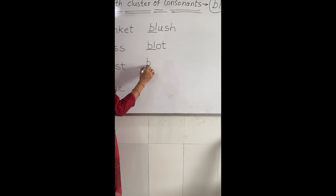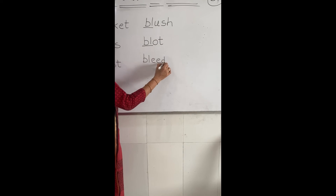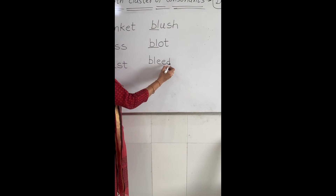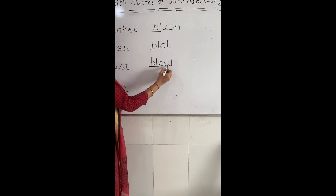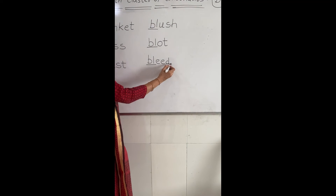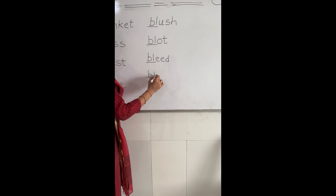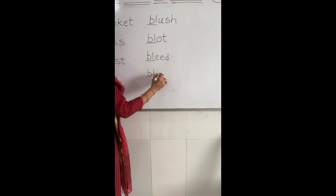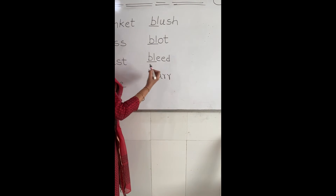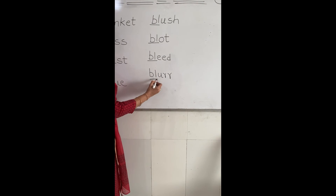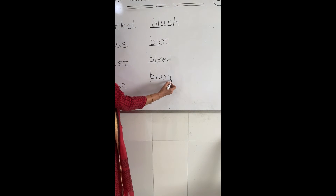The next word is 'blur'. B, L, U, R — blur. So B, L, U, R — blur.